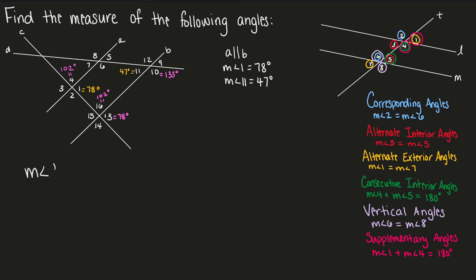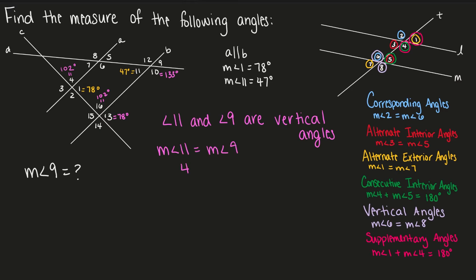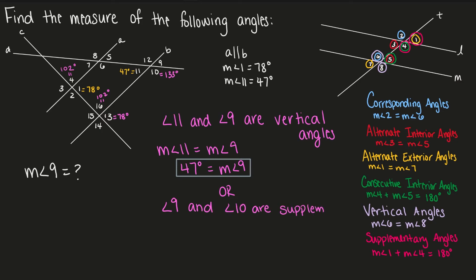Next, let's find the measure of angle 9. Angle 11 and angle 9 are vertical angles. Vertical angles are congruent, so since angle 11 is equal to 47 degrees, angle 9 is also equal to 47 degrees. Another way we can find angle 9: angle 9 and angle 10 are supplementary angles, so angle 9 plus angle 10 equals 180 degrees, or angle 9 equals 180 minus 133, and we find that angle 9 is equal to 47 degrees.